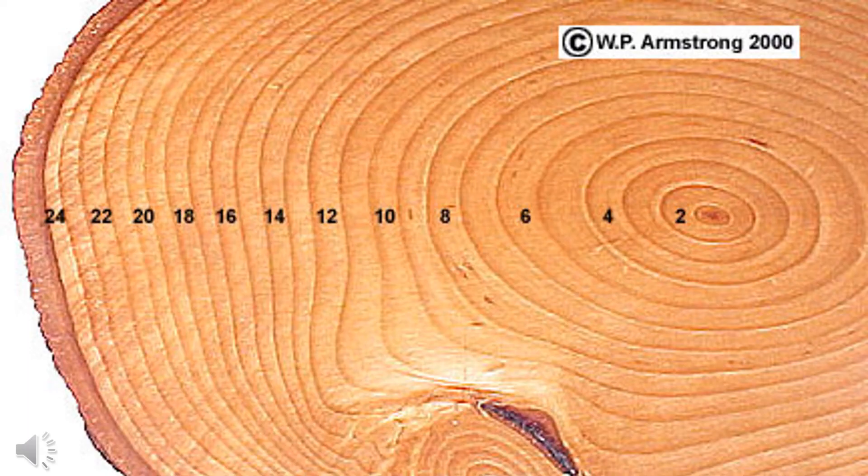A tree cookie is a horizontal cut from a tree trunk. The space between the two dark lines is equal to one ring. A ring represents one year of the tree's life. This means the total amount of rings is equal to the tree's age in years. Let's look at this sample and count the rings together.